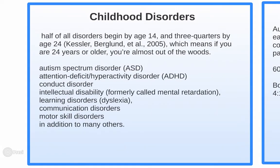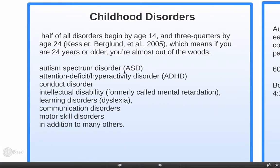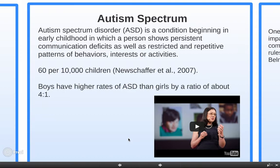Half of all disorders occur by age 14 and three-quarters by age 24. Disorders that occur specifically in childhood include autism spectrum disorder, attention deficit hyperactivity disorder (ADHD), conduct disorder, intellectual disability (formerly called mental retardation), learning disorders, communication disorders, and many others.